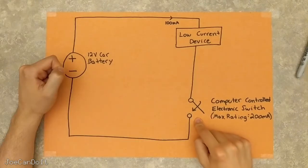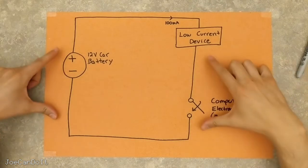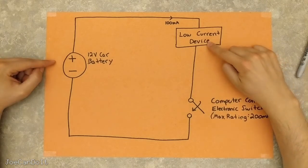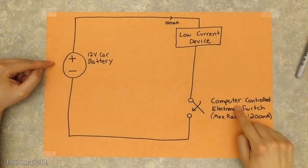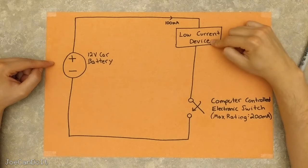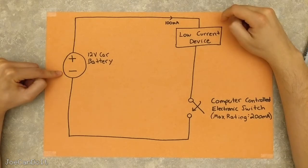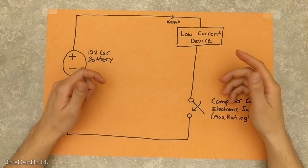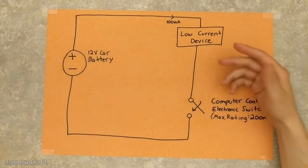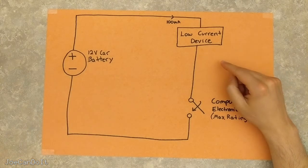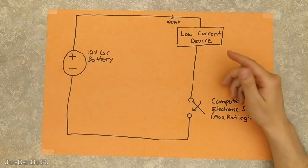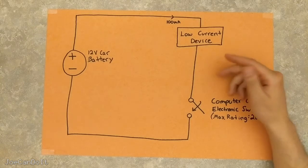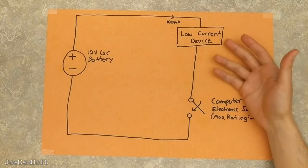When the switch does become closed, this circuit will be complete and it will power this device. When the computer does decide to close the switch, this device will draw 100 milliamps from the battery. So let's say you're doing an installation and you're trying to find a blue wire. That blue wire will give you a chassis ground when you turn your radio on, and when the radio is off it has no signal whatsoever.